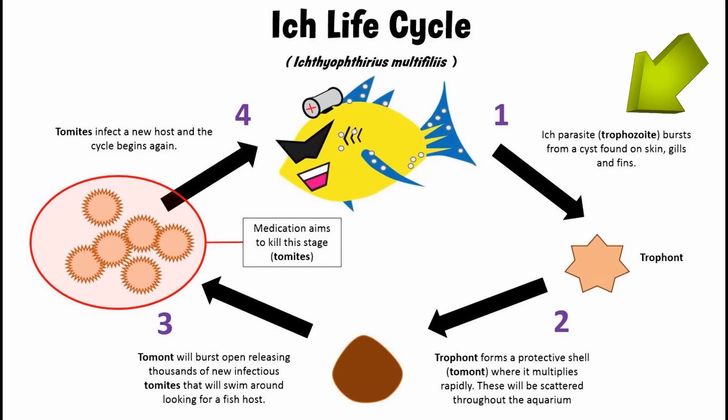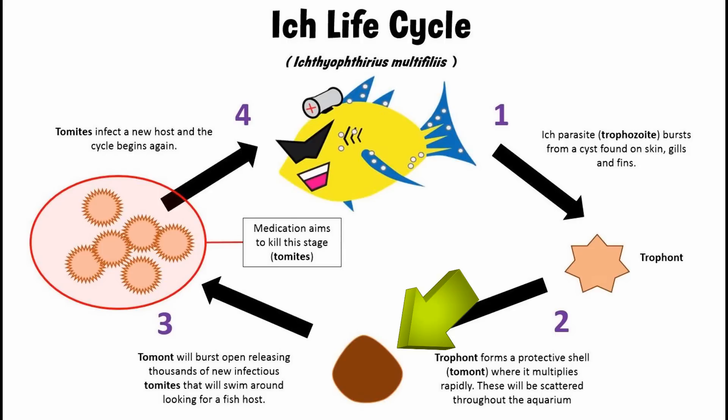Inside the cyst, the parasite — also called a trophozoite or trophont — will feed and mature, eventually breaking out where it's released to the environment. It will fall onto leaves, rocks, and the substrate, where it will further develop into a protective shell called a tomont.